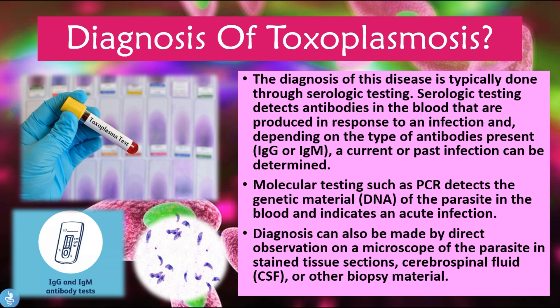The diagnosis can also be made by direct observation under a microscope of the parasite in stained tissue sections, cerebrospinal fluid, or other biopsy material. Since many patients have brain involvement, CSF samples can be drawn. Other affected organ systems can also be biopsied, stained, and viewed under a microscope. This is what the classical microscopic image of Toxoplasma gondii looks like.